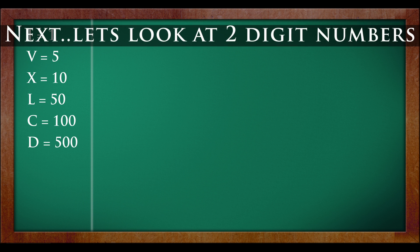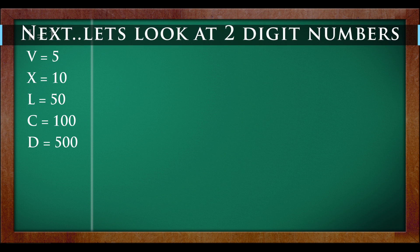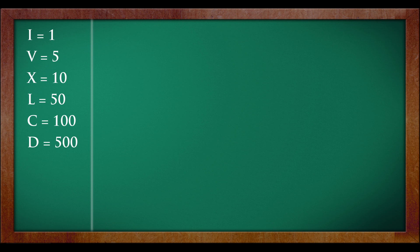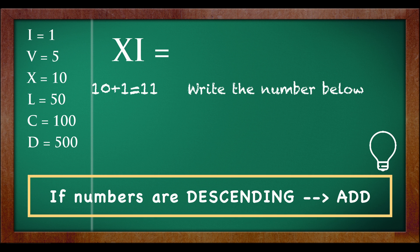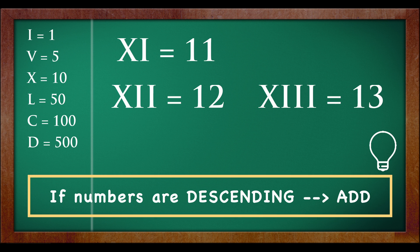Next, we get to the two-digit numbers. Let's see if a formula works. What is XI? First write the numbers below, 10, 1. Because they are in descending order, we have to add. 10 plus 1 is equal to 11. Similarly, for 12 and 13, the formula will work too.